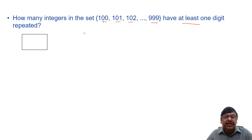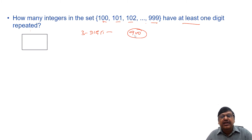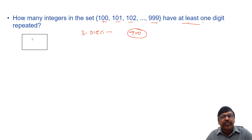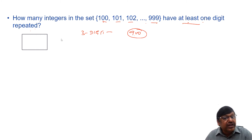This set consists of all three-digit integers from 100 to 999, giving us 900 three-digit integers in total. Out of these 900, we want to find how many have at least one digit repeated. We'll use complementary counting — first finding how many have all three digits distinct.